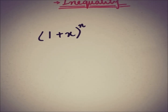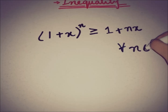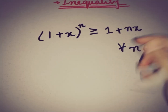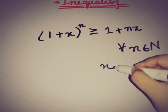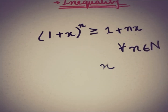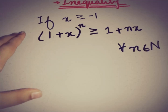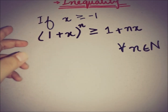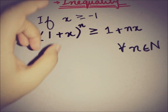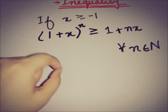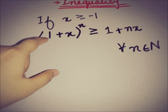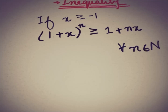The inequality states: 1 plus x to the power n is greater than or equal to 1 plus n times x. This is true for all n in the natural numbers, with the restriction that x should be greater than or equal to minus 1. So this is Bernoulli's inequality in its pure real form.